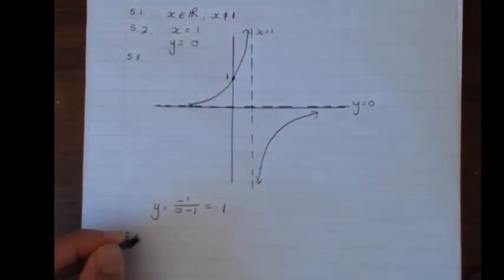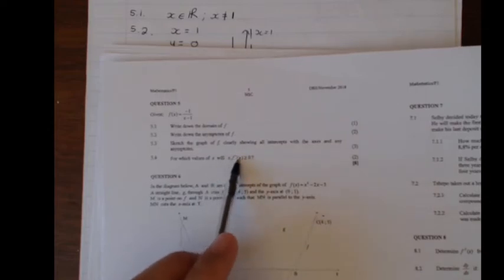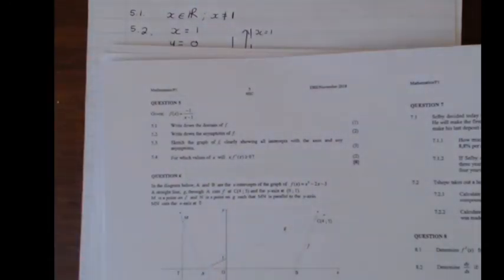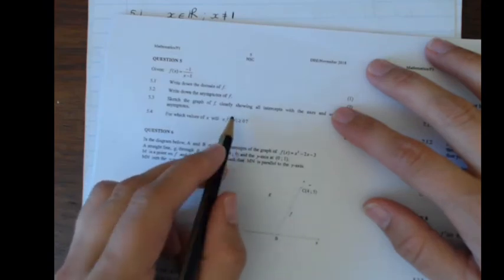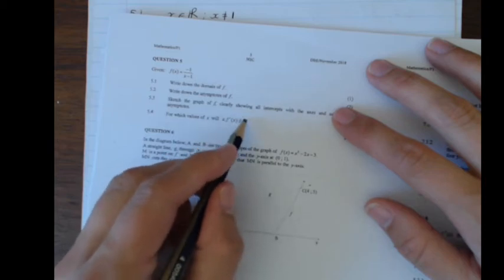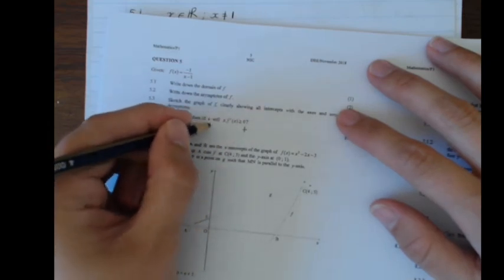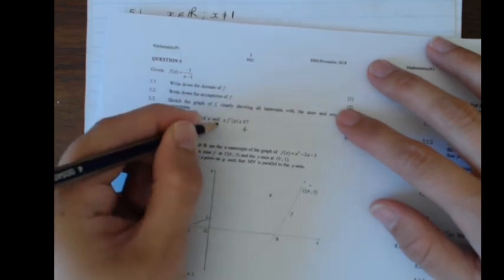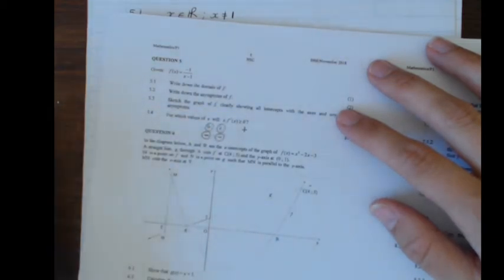And then question 5.4 says, for which values of x will x times f'(x) be bigger equal to 0. So we had questions like this in 2017 and 2016 paper, where something multiplied with one another bigger than 0 means that I want something to be positive. Bigger than 0 is positive.